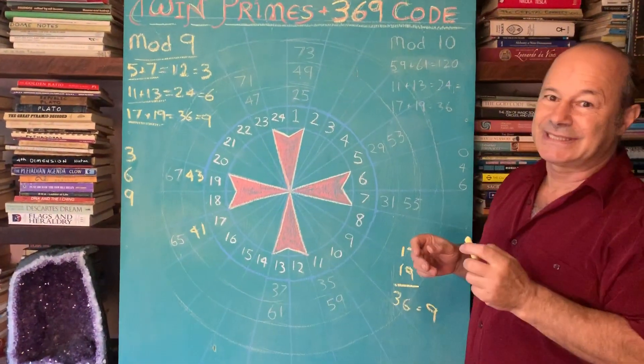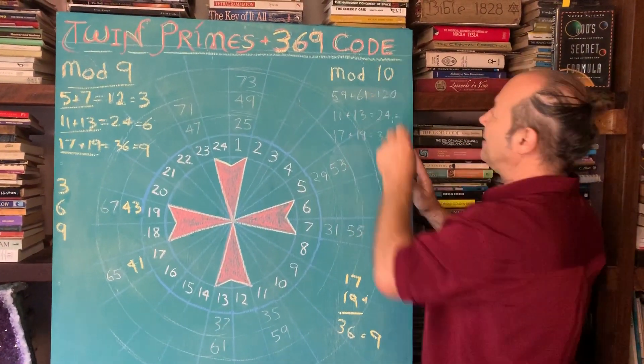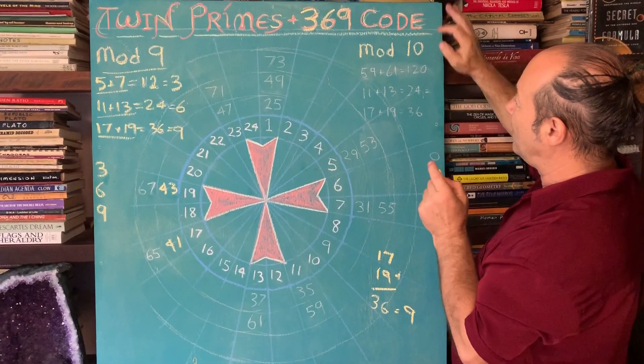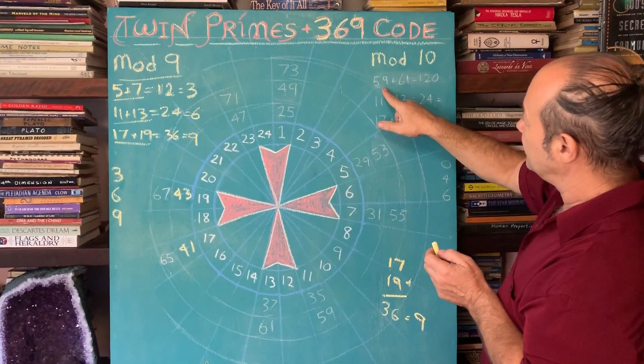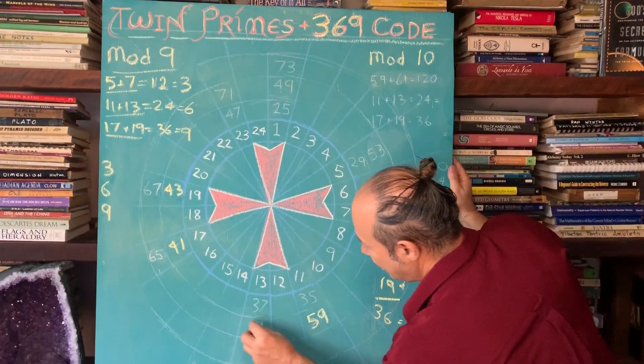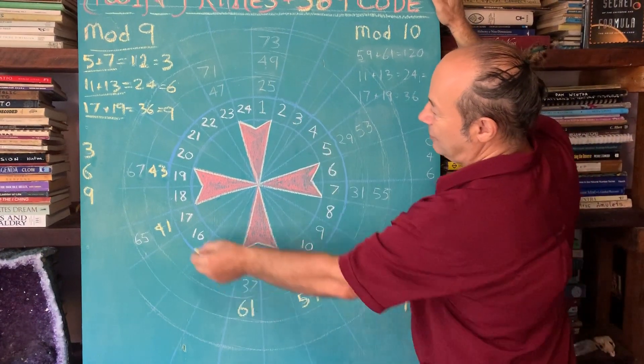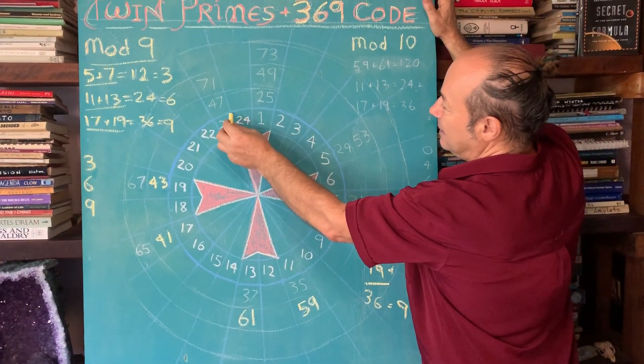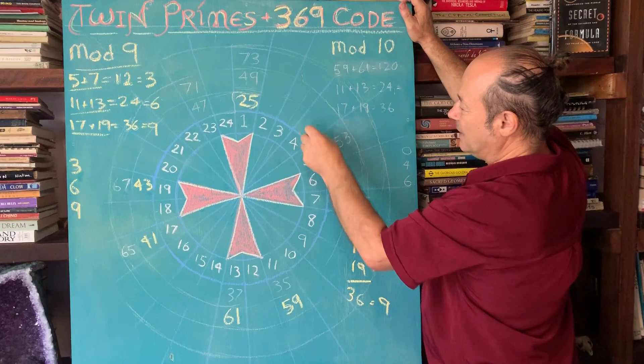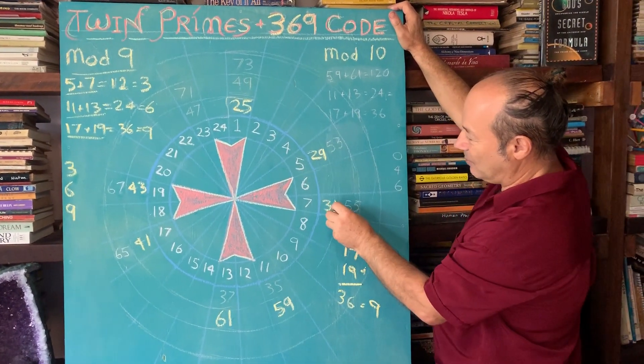But let's now have a look at mod 10. So imagine the clock doesn't have 12 hours. Imagine a clock has only got 10 hours or 10 numbers. So this time we're going to take away 10, 10, 10. So let's look at some twin primes, 59 and 61. So here we've got 59 and 61. I'm writing with my left hand here, I'm ambidextrous. How did I get these numbers? Because I went 1 to 24 in order, and then the next ring, even though this is 24 here, I jumped up. So this is how I got 25, 26, 27, 28, 29, 30, 31. And you can see that 29 and 31 are twin primes. We're going to add them up.